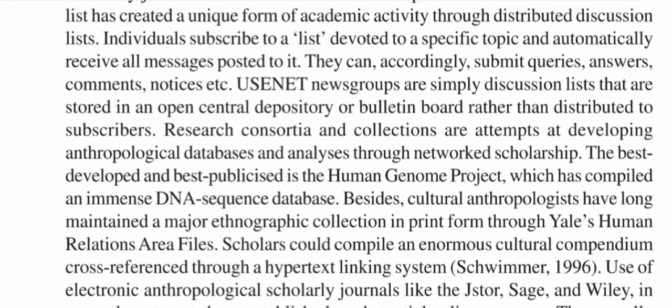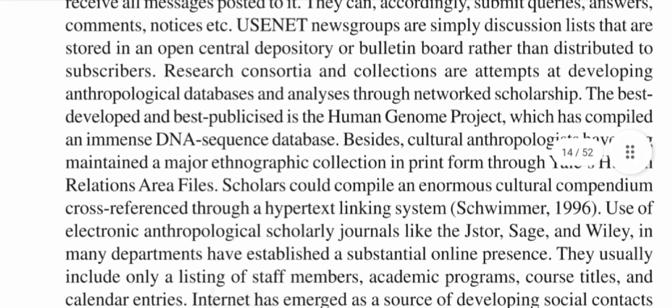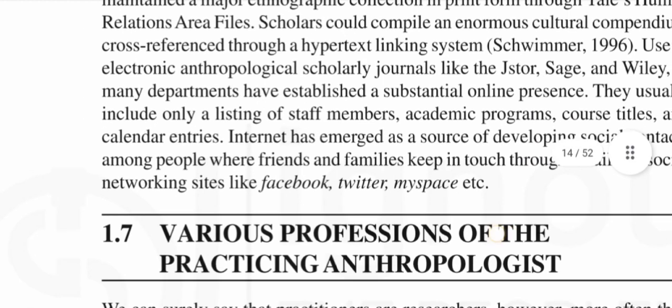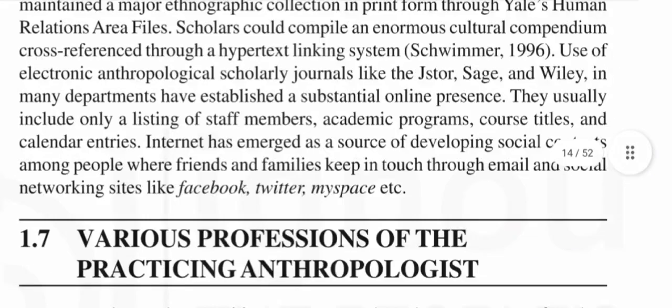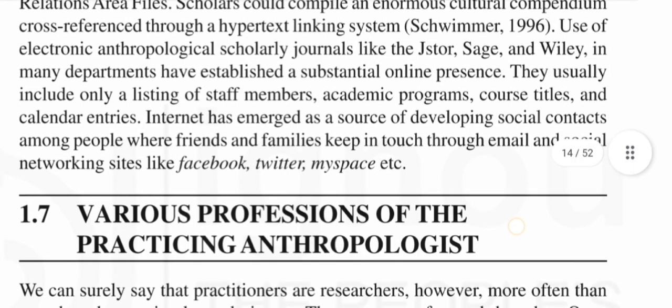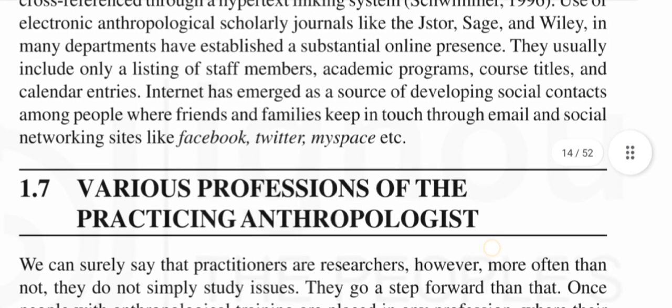Electronic anthropological scholarly journals like Jester, Sage, and Wiley, and many departments have established a substantial online presence, usually including a listing of staff members, academic programs, course titles, and calendar entries. The internet has emerged as a source for developing social contacts among people, where friends and families keep in touch through email and social networking sites like Facebook, Twitter, WhatsApp, MySpace, etc.